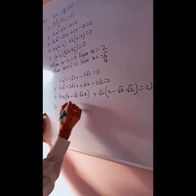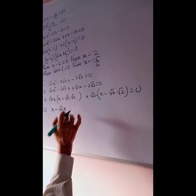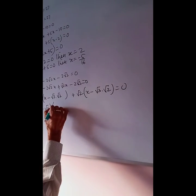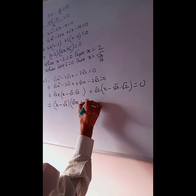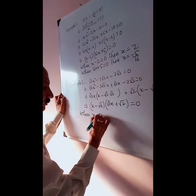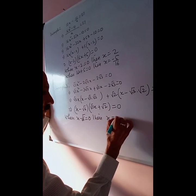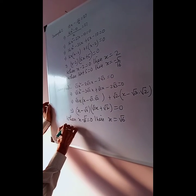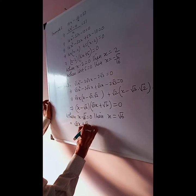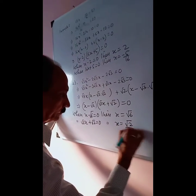The common factor is x minus √6. So (x minus √6)(√3 x plus √2) equals 0. When x minus √6 equals 0, then x equals √6. When √3 x plus √2 equals 0, then x equals minus √2 by √3.